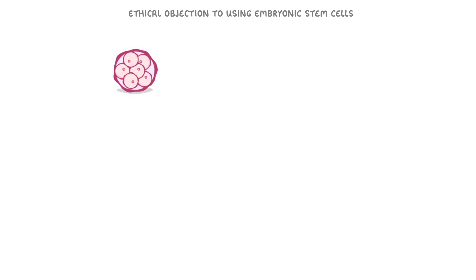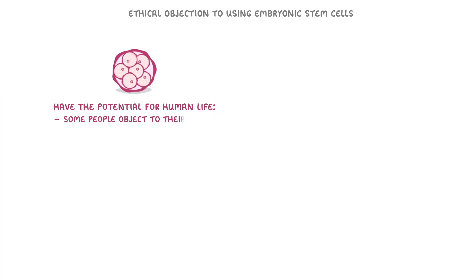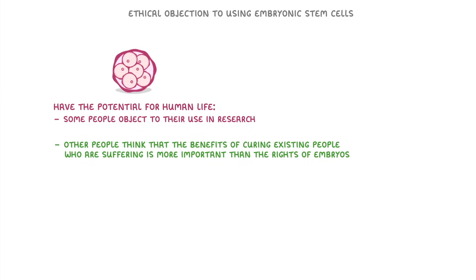The final thing we need to cover is the ethical objection to using embryonic stem cells. This is the idea that the human embryos being used have the potential for human life, and so on religious or moral grounds some people object to their use in research. On the other hand, other people think that the benefits of curing existing people who are suffering is more important than the rights of embryos.